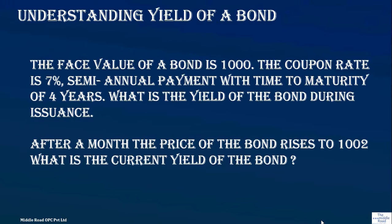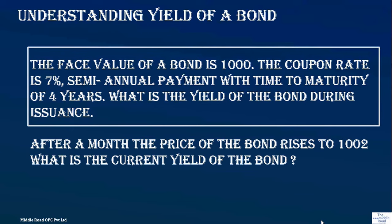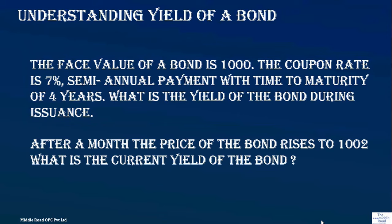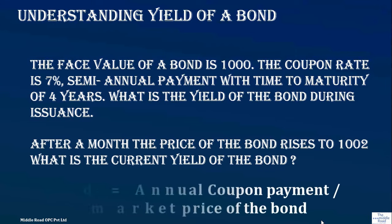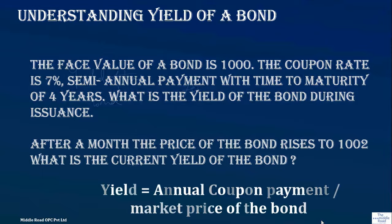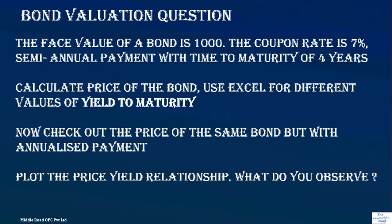Let's look at an example to see how yields change for a bond. The face value is 1,000, the coupon rate is 7% paid semi-annually. The annual coupon is 7% of 1,000, which is 70, paid in two installments of 35 each. I've made an Excel sheet to show what happens with annual and semi-annual payment. The time to maturity is four years — a short-term bond used here as an example.